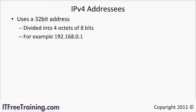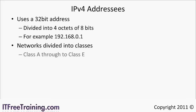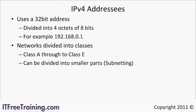Originally all networking was divided into classes. These classes went from A to E and depending on the class determined how many computers could be on that network. These networks can be broken down into smaller parts in a process called subnetting. IP version 4 since it was originally introduced has been improved and developed. The system of classes puts limits on the way networks could be designed. Since then classless networks have been added which allow you to change the way networks are designed.